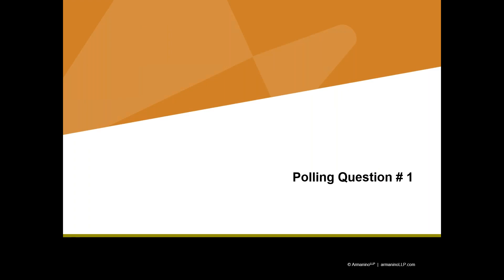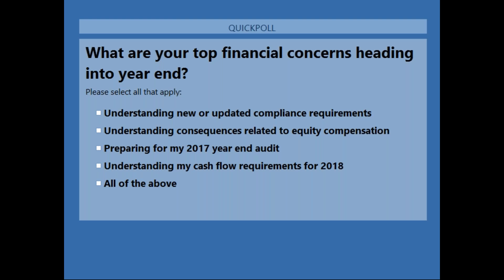Let's get started with our first polling question. Please remember, we have four questions and you have to answer three out of those four. So what are your top financial concerns heading into year-end? Is it A, understanding new or updated compliance requirements? B, understanding tax consequences related to equity compensation? C, preparing for my 2017 year-end audit? D, understanding my cash flow requirements for 2018? Or all of the above?